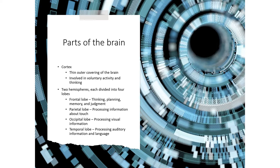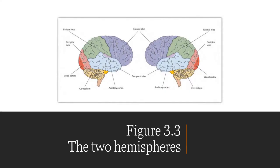Each hemisphere is divided into four lobes: the frontal lobe for thinking, planning, memory, and judgment; the parietal lobe for processing touch; the occipital lobe for processing visual information; and the temporal lobe for processing auditory information and language. The prefrontal cortex's development is uniquely important during infancy and has major implications for how early environments shape frontal circuits for complex cognitive skills. Animal models and human studies suggest that frontal lobe structure and function are permanently shaped by — and may be uniquely susceptible to — early adverse experiences.